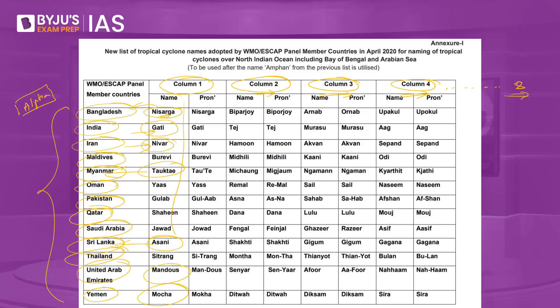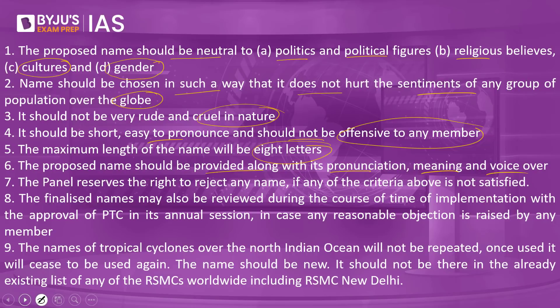As we see in this image, we have the name and the pronunciation, which should be provided by that particular country. The panel reserves the right to reject any name if any of the criteria is not satisfied. If it is in conflict with any of the parameters set by the authorities, the name can be rejected. The finalized names may also be reviewed during implementation with the approval of the panel in its annual session if any reasonable objection is raised by any member.